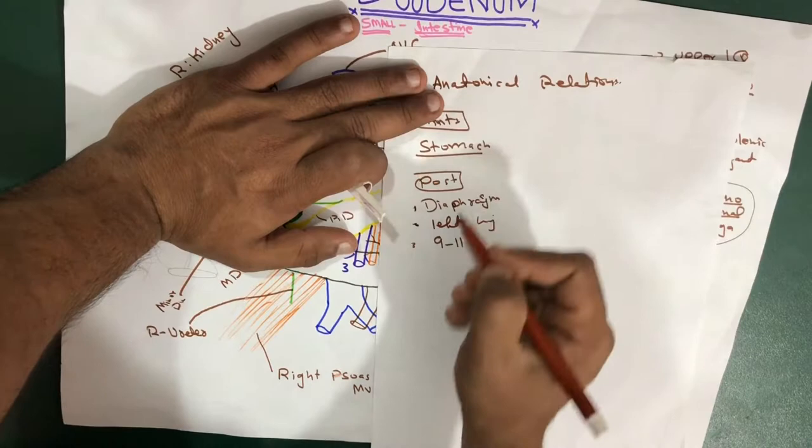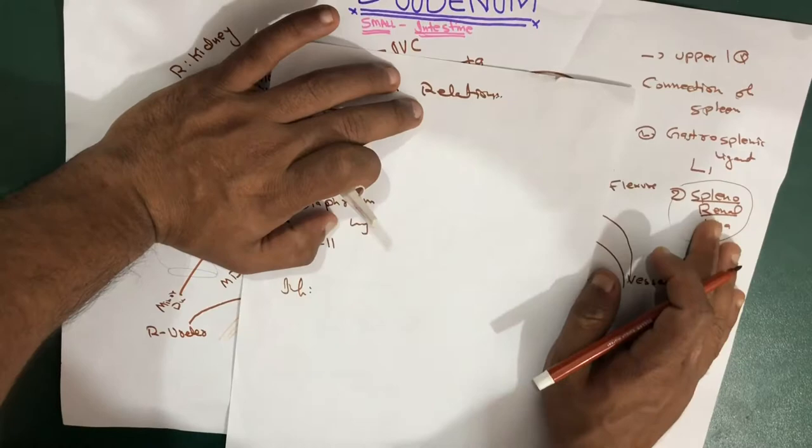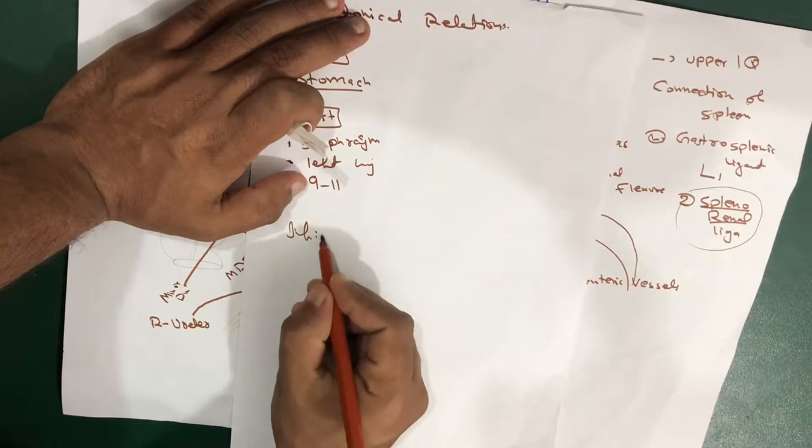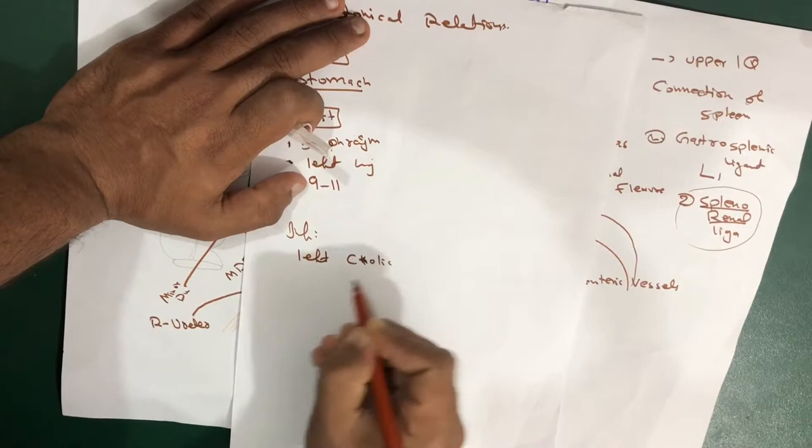If we talk about inferiorly, what is located inferiorly: we have the left colic flexure. When the large intestine takes a turn, it forms a flexure — a splenic flexure, we also call it, or the left colic flexure.